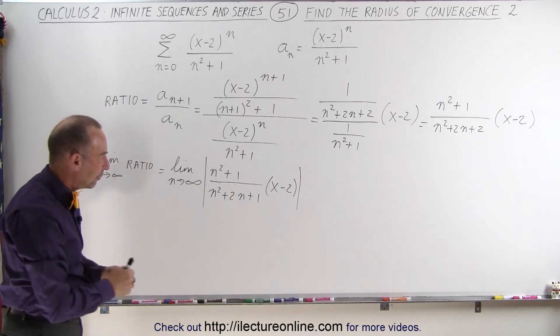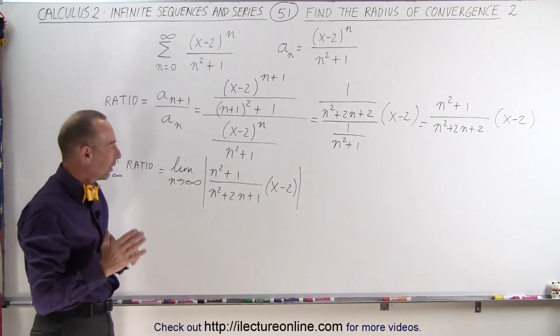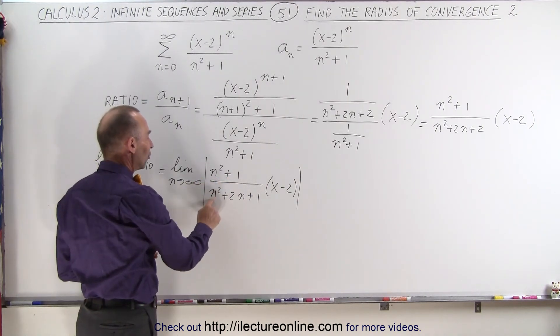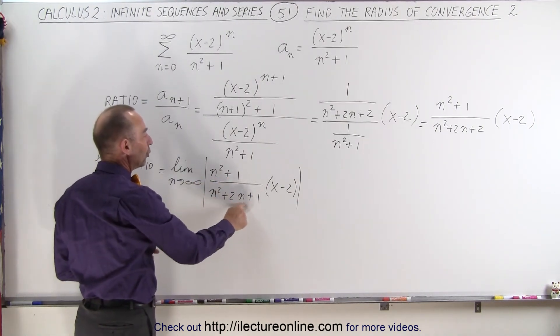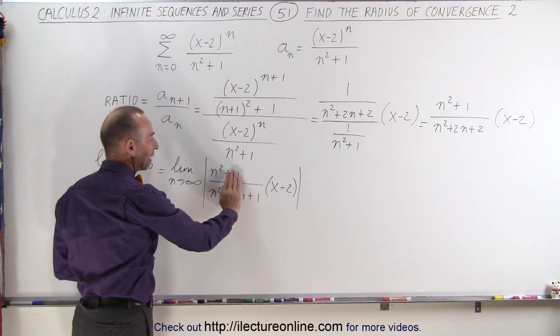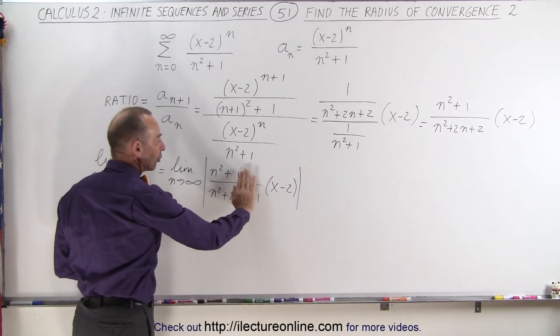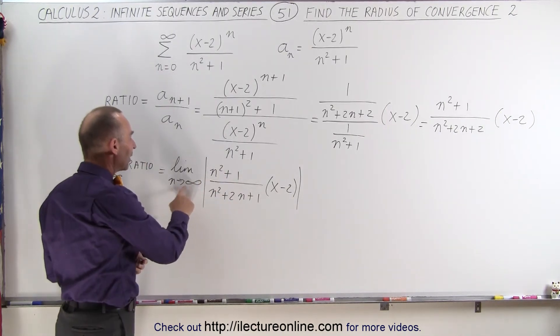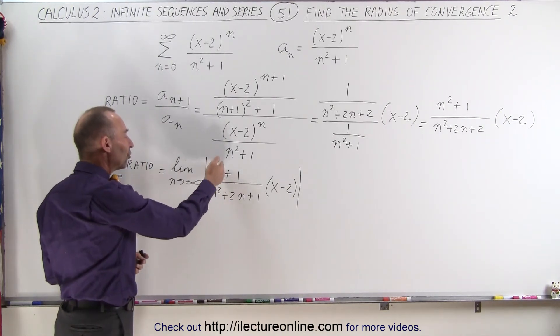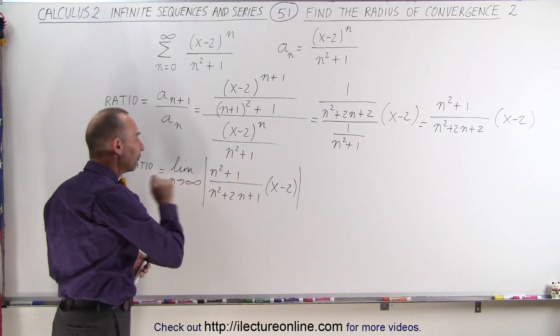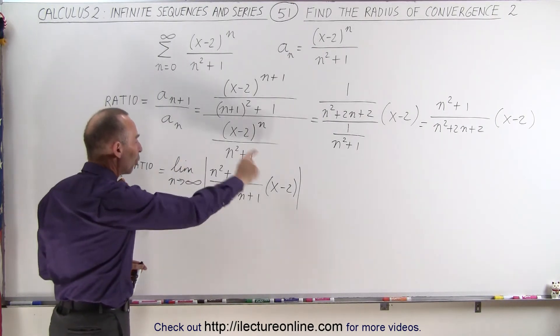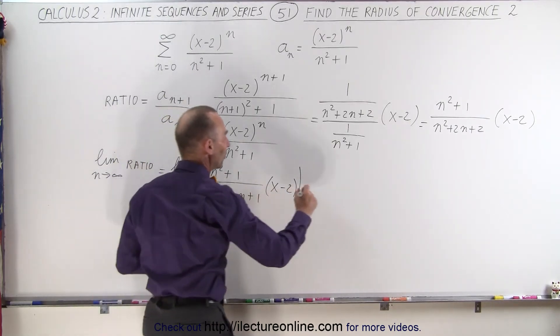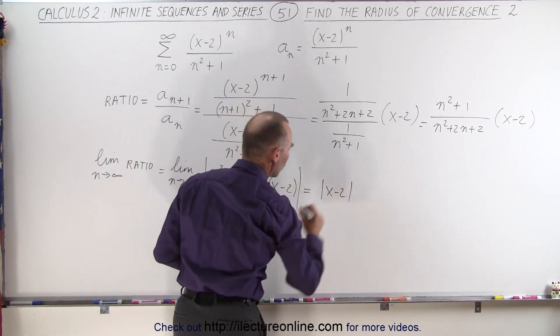If we take the limit of this ratio as n gets very large, n squared will become much larger than 1, and n squared will become much larger than 2n or 1. As n gets very large, we can ignore the other terms in that ratio. As n becomes infinite, the ratio of n squared divided by n squared converges to 1, and this whole limit will simply be 1 times x minus 2, or simply x minus 2.